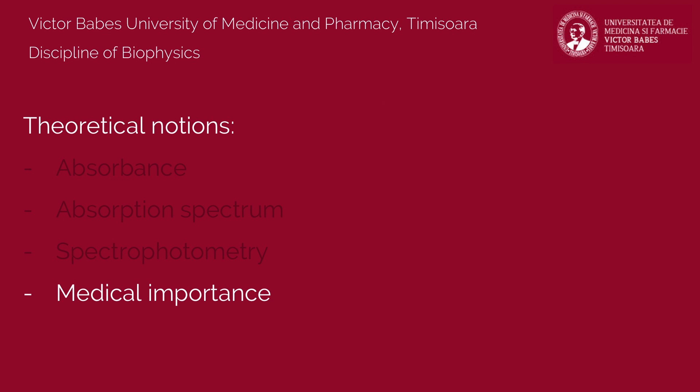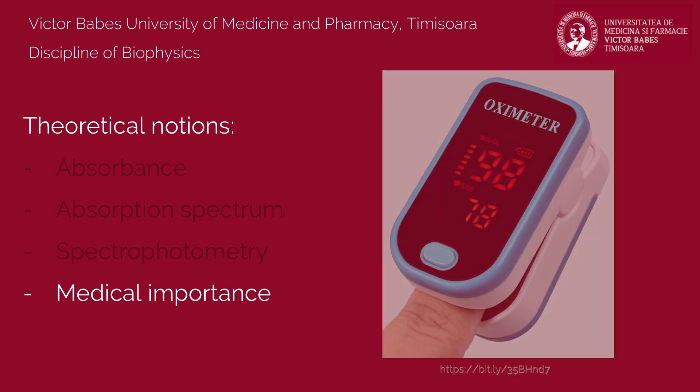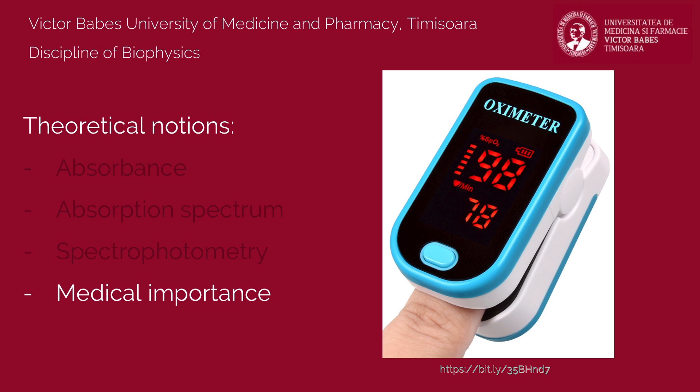Spectrophotometry is also employed to measure, in vivo and non-invasively, the concentration of oxygenated and reduced hemoglobin through a specific method called pulse oximetry.